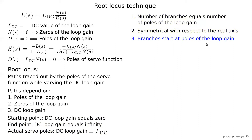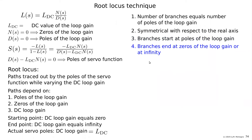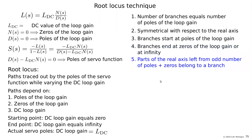Rule 3: The branches start at the poles of the loop gain — setting DC loop gain to zero gives D(s) equals zero, placing us at the loop gain poles. They end at the zeros of the loop gain or at infinity by letting L_DC go to infinity. Rule 4: Parts of the real axis to the left of an odd number of poles and zeros belong to a branch of the root locus.